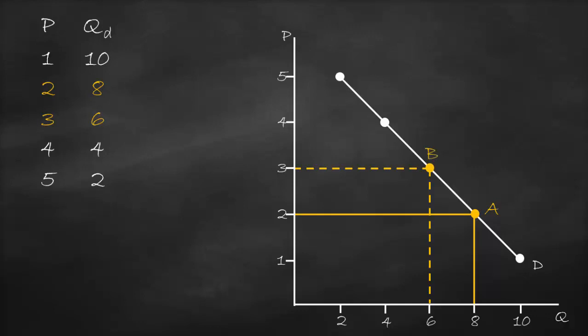I will label this point B. When we changed the price from 2 to 3, the quantity demanded dropped from 8 to 6, which means we moved from point A to point B on the same demand curve. We call this a movement. A movement on the same demand curve happens when there is a change in price — we move from one point to another, and any point on the demand curve represents quantity demanded.